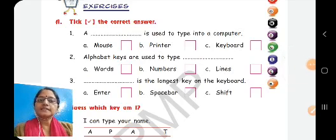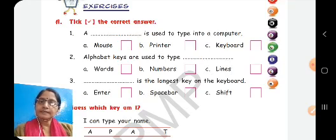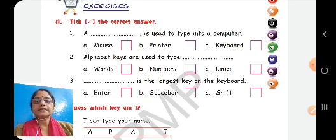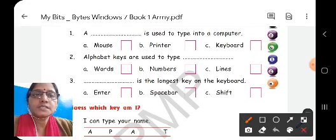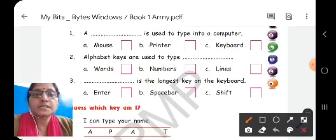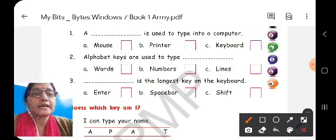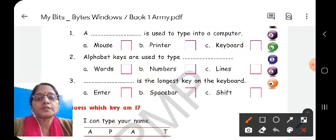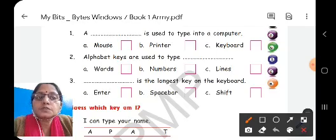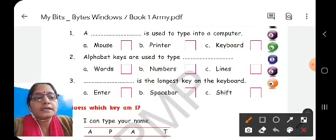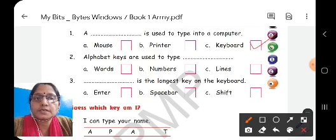In the previous video, we had done chapter 6, keyboard, and completed the book exercise. Let us revise once again. Our first question is: tick the correct answer. Question A: a dash is used to type into a computer. Three options are given: mouse, printer, and keyboard. As we have studied, the keyboard is used for typing letters, words, sentences, or numbers. So it is the keyboard which helps us write anything on the computer. You will put a tick in box C, that is keyboard.